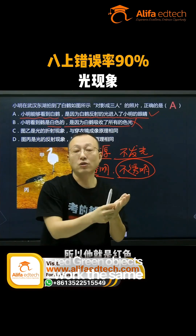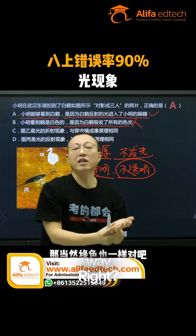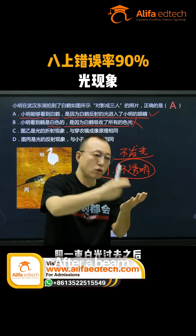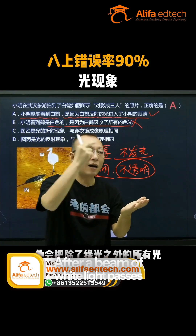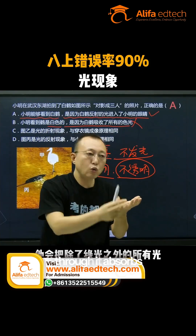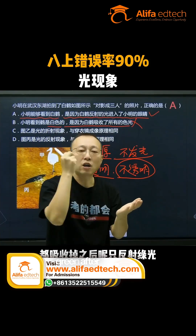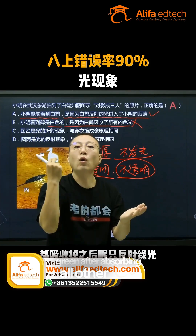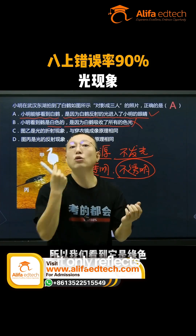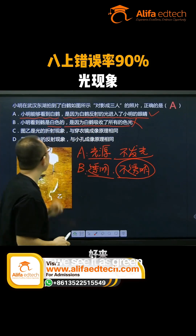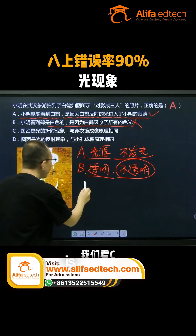Green objects work the same way. After a beam of white light passes through, it absorbs all light except green. After absorbing all other light, it only reflects green light, so we see it as green. Therefore, option B is incorrect.